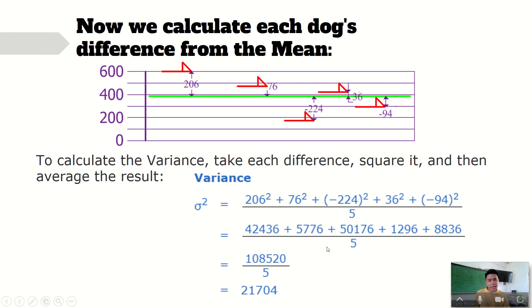Divided by 5. Then you will have the sum of it all, that is 108,520 divided by 5, which is 21,704. That is your variance.